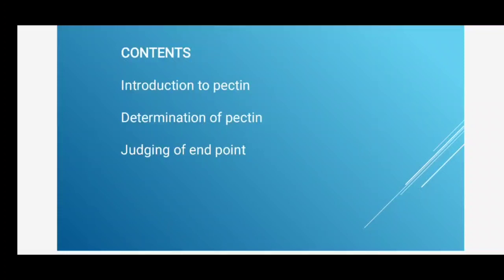For jelly preparation, pectin plays an important role — without pectin content we cannot form the jelly. We can divide foods into different categories on the basis of pectin as well as acid content. There are four categories: rich in pectin and acid; rich in pectin but low in acid; low in pectin but rich in acid; and low in both pectin and acid.